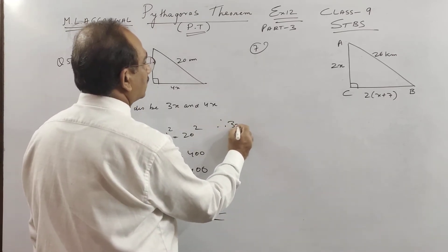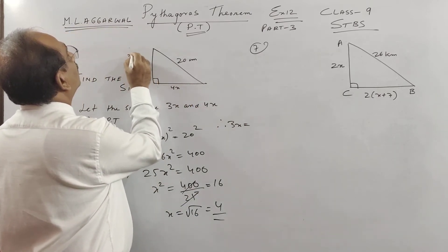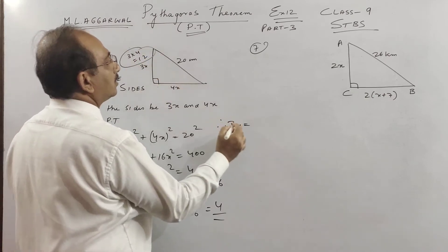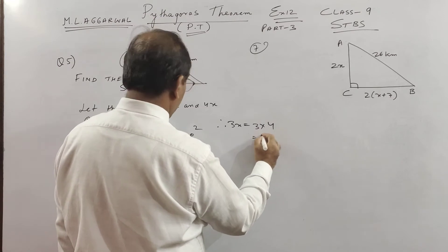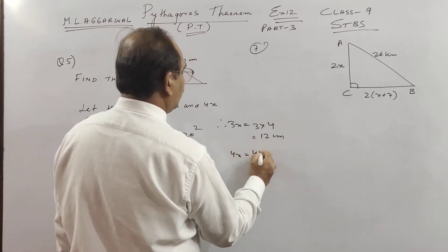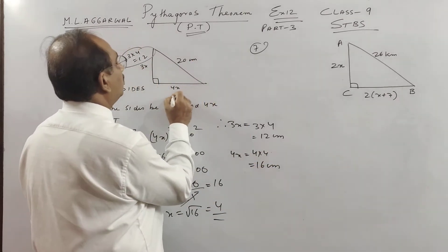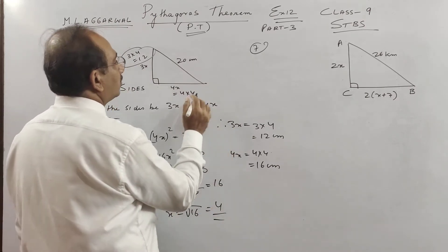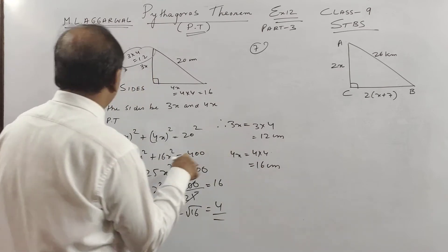Therefore, 3x this side will be 3 into 4, 12 centimeter. And 4x will be 4 into 4 equal to 16 centimeter. So x is 4, plus 4 minus 4 we do not take.